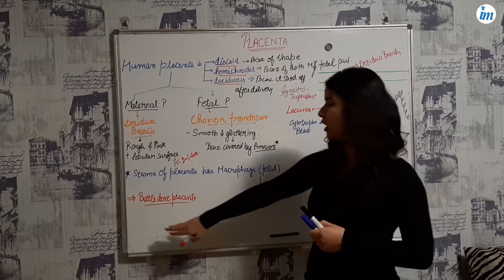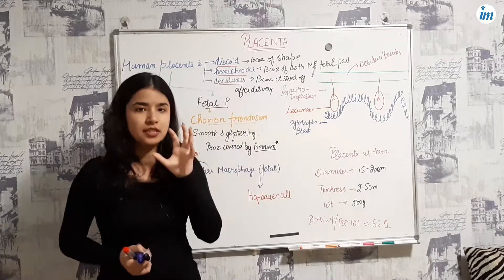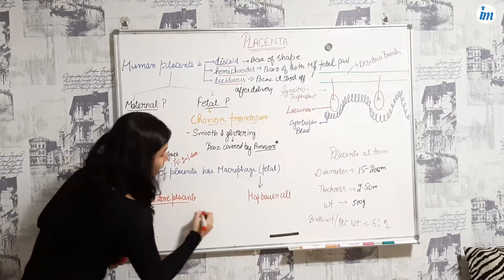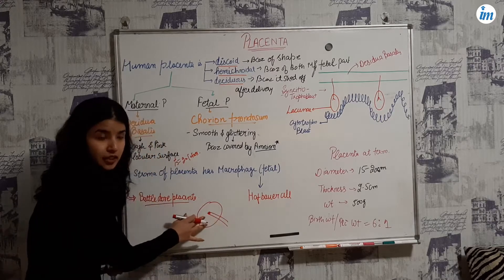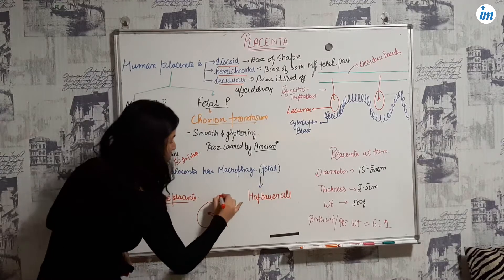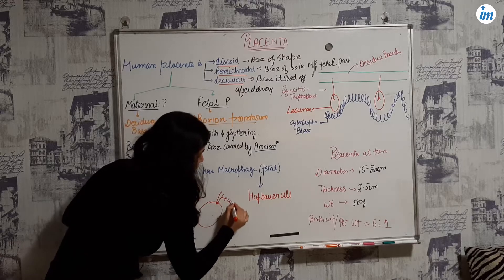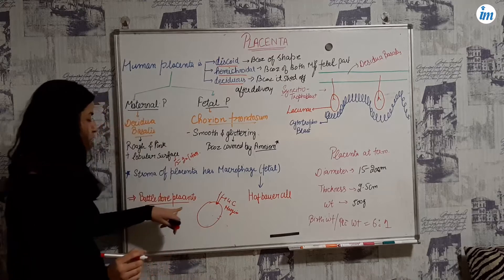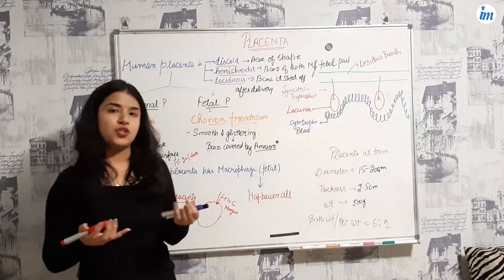Now about the battledore placenta: generally the placenta has the umbilical cord inserted in the center, but when the umbilical cord is inserted at the margins, we call it battledore placenta, also known as marginal placenta.